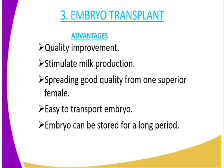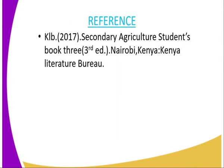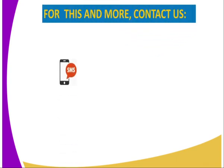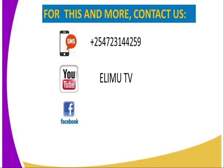We have come to the end of today's lesson. Your assignment: first, state any three methods of servicing in livestock; second, highlight any five advantages of artificial insemination. For reference, you can refer to the Secondary Education Student Book 3, published by the Kenya Literature Bureau. For more information, you can reach us at RMTV via SMS, YouTube, Facebook, or Twitter at RMTV underscore KE.